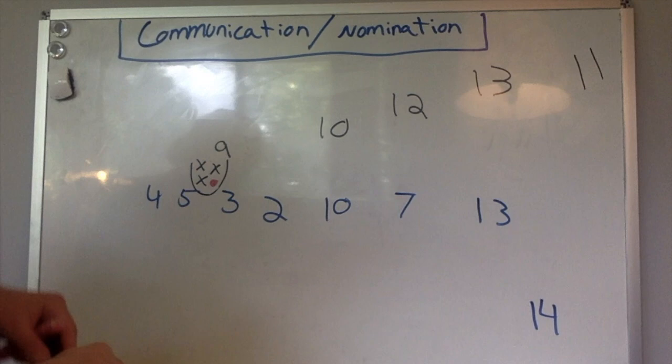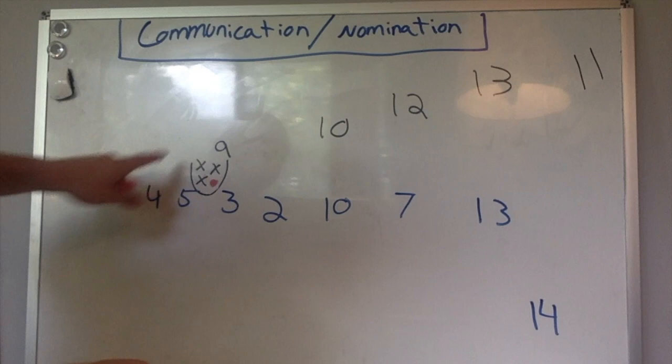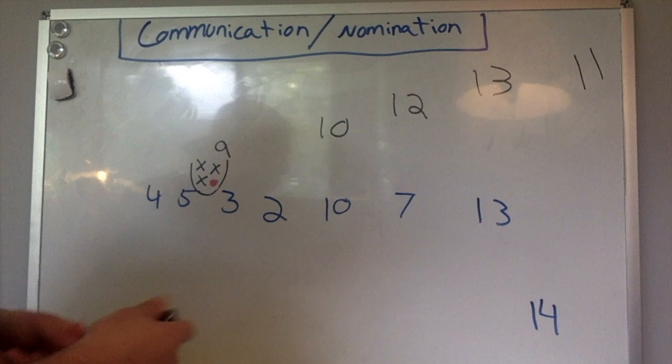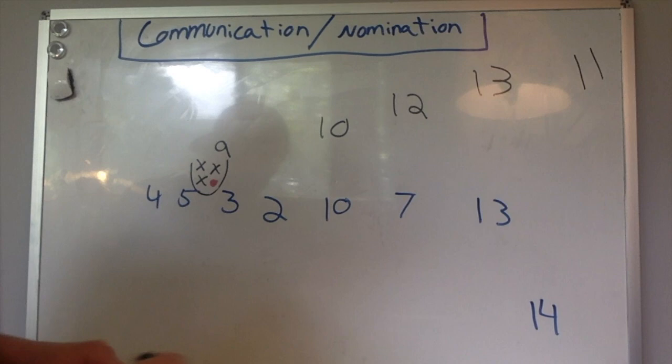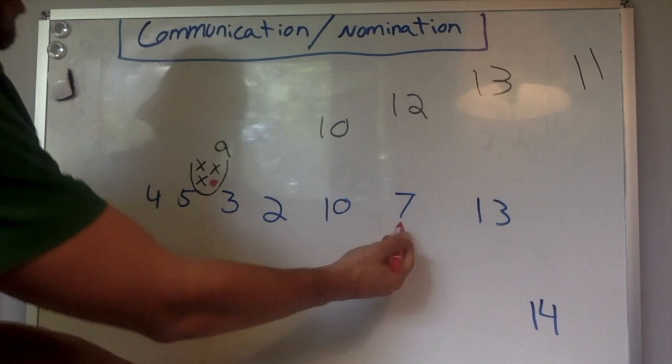Our next defensive principle is communication and nomination. So if our interior defenders are focused around what's going on around the ruck and they're able to call ball out, what we can do is we can have our exterior defenders communicating with one another with their person on the inside, person on the outside, specifically who they're guarding.